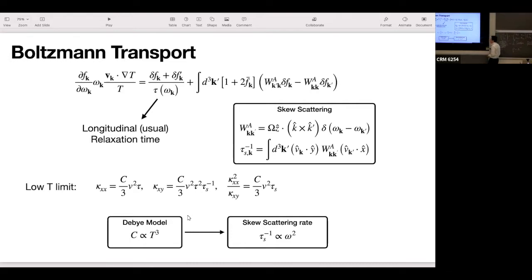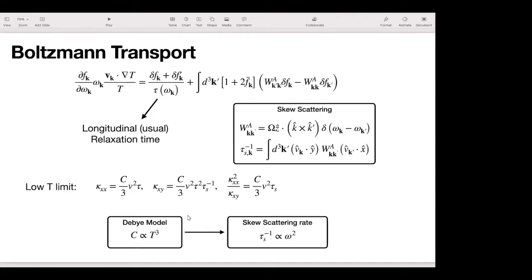If you assume a low temperature Debye model, where heat capacity scales as T cubed, then you have to assume, in order to get a linear in T relation, you have to assume that the skew scattering rate goes as frequency squared, or like it's the same as temperature squared.